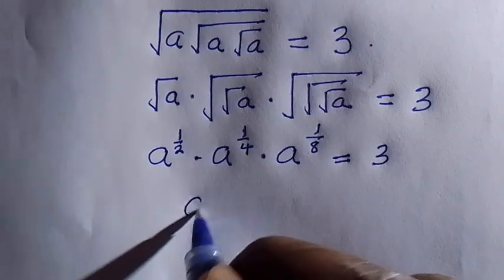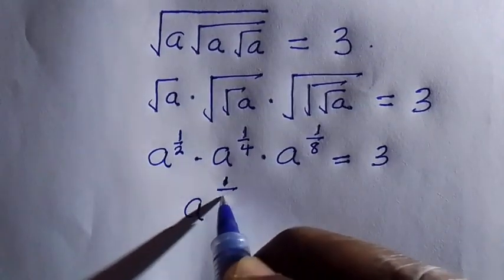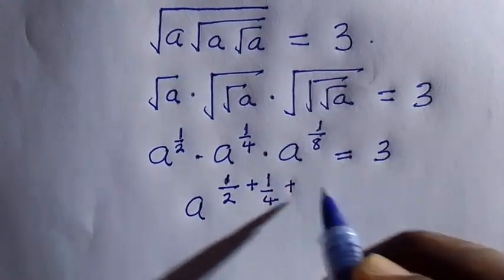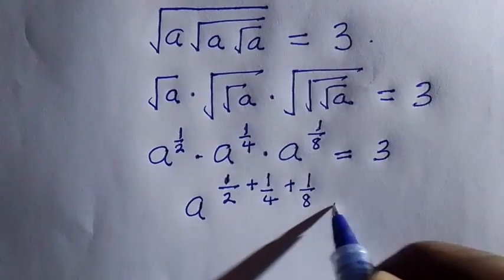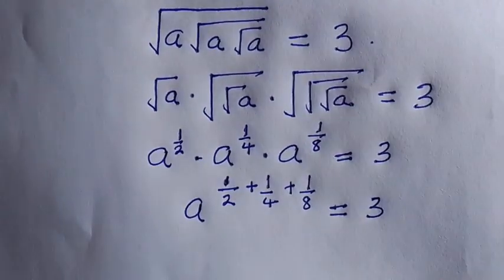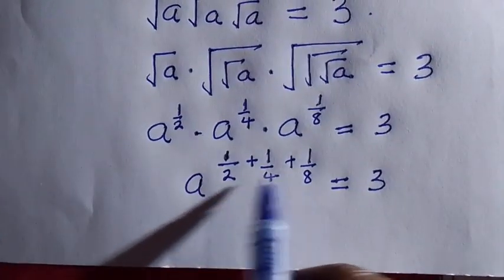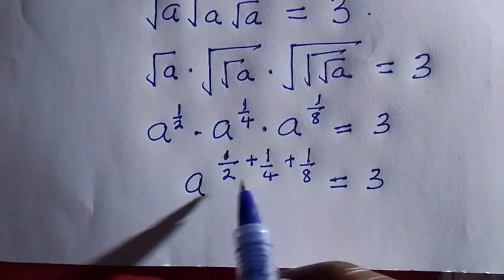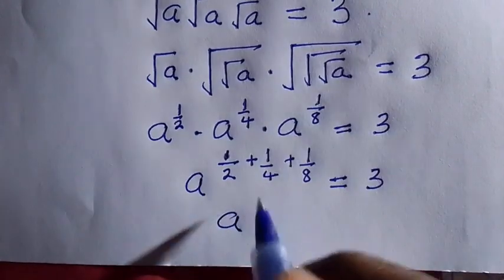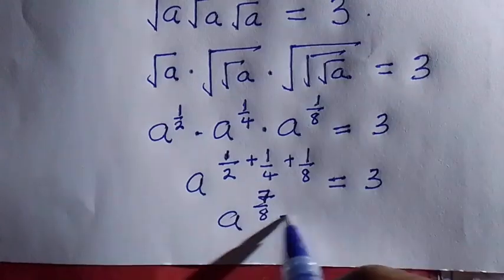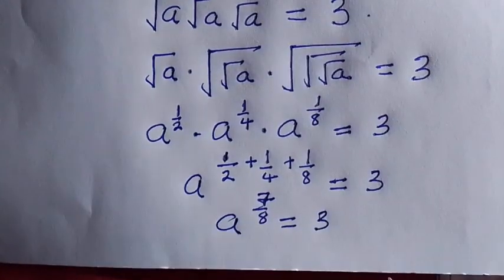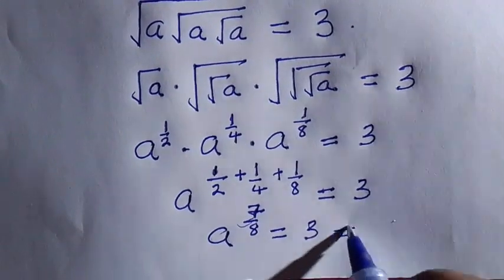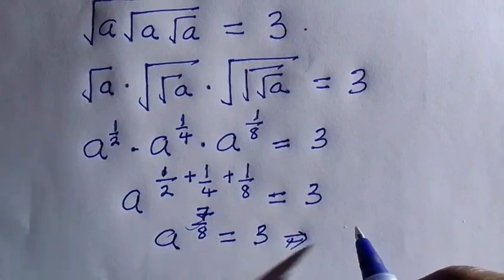We should note that for every root it means the power of 1 over 2. So for the first one we have a to the power of 1 over 2, multiplied by a raised to the power of 1 divided by 4, multiplied by the last one which is a raised to the power of 1 divided by 8, equals 3. Then by the product rule of exponents, we have a to the power of 1 over 2 plus 1 over 4 plus 1 over 8, everything equals 3.